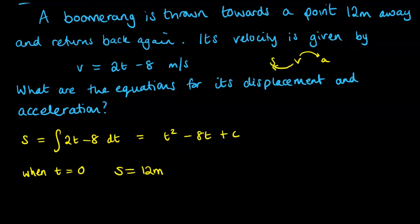So when t is 0, we're 12 meters away. So if we put that into our formula, t squared minus 8t plus c must equal 12 when t is 0. So 0 squared plus 8 times 0 plus c equals 12. So of course, c is 12.